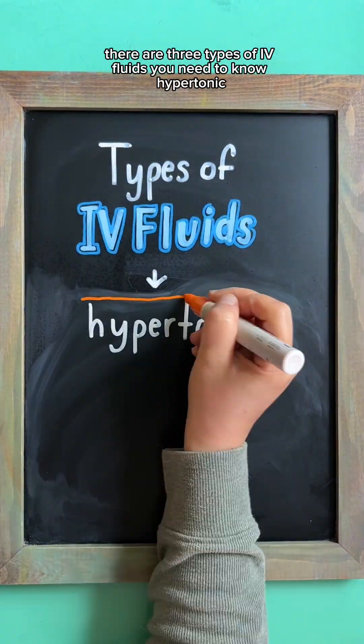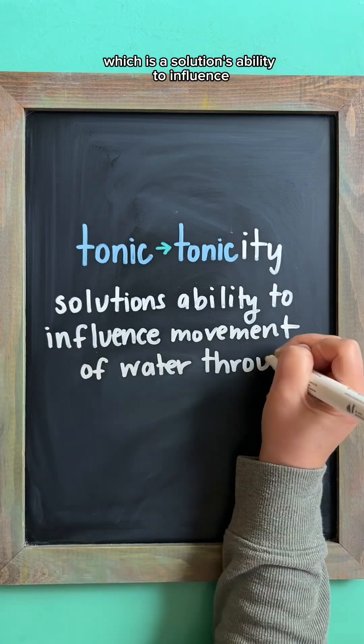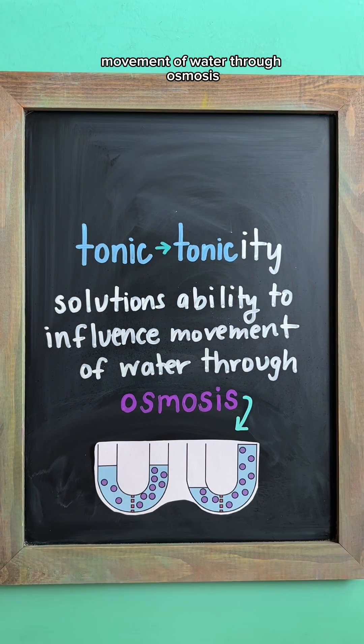There are three types of IV fluids you need to know: hypertonic, isotonic, and hypotonic. Tonic refers to tonicity, which is a solution's ability to influence movement of water through osmosis.